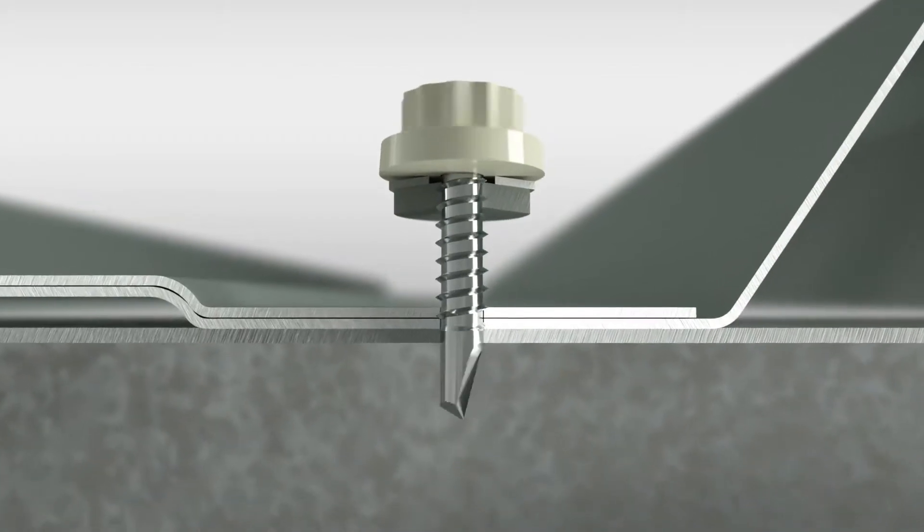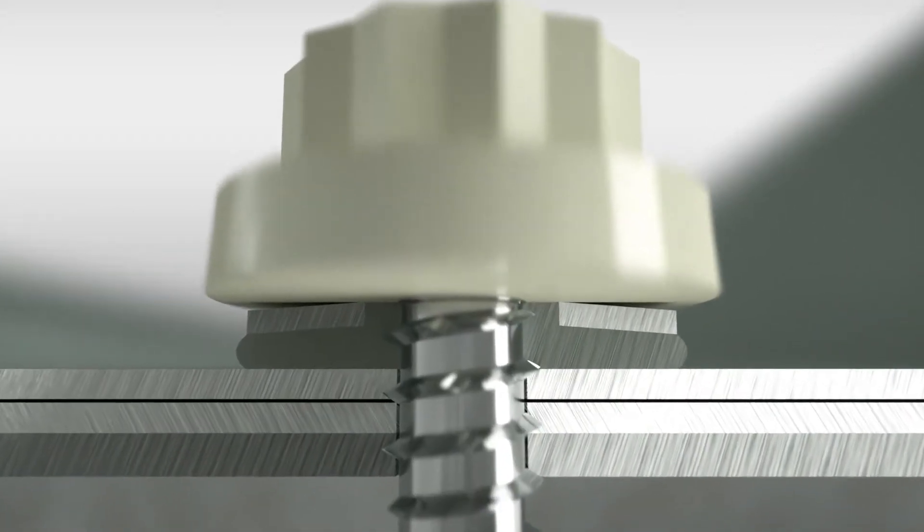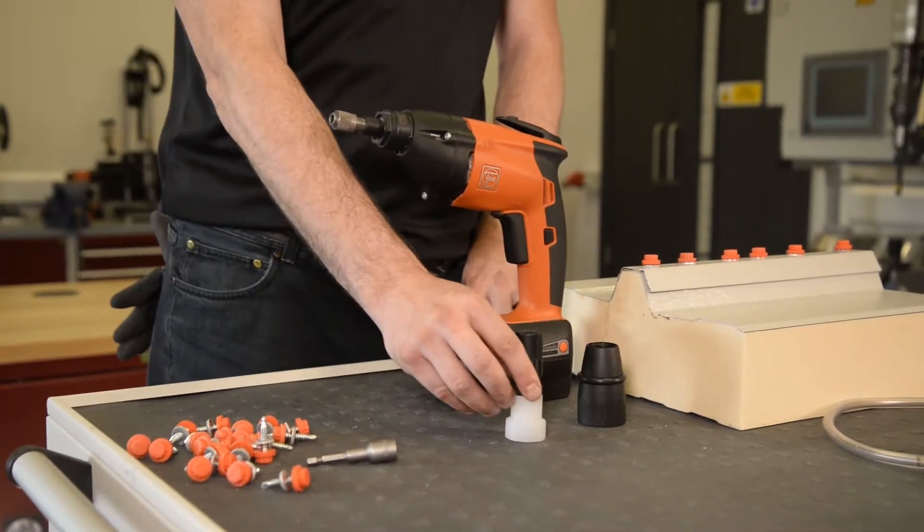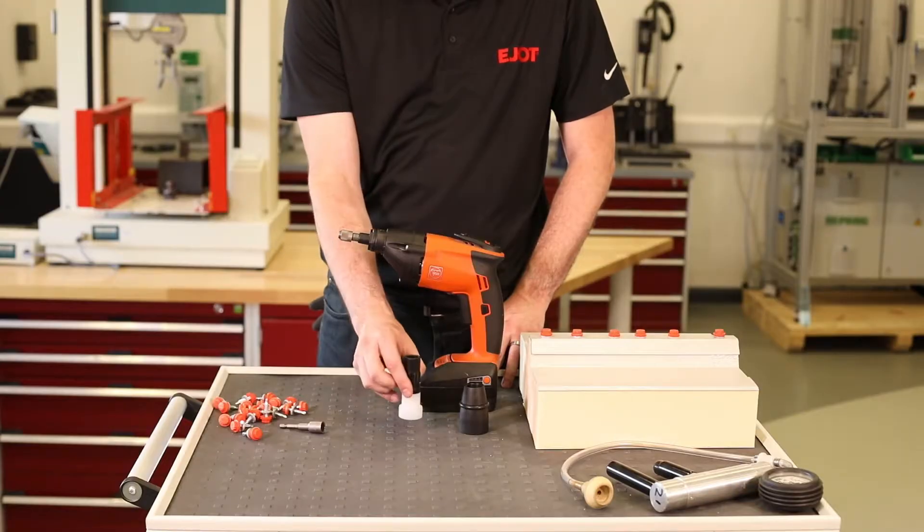A safe and secure fix means the correct thread engagement into the metal thickness you're installing into and the correct washer compression to create a good seal. That means setting the depth the right way, and this easy to use nose piece is all the help you need.